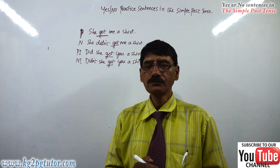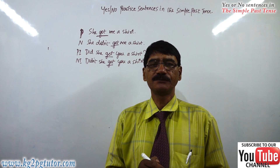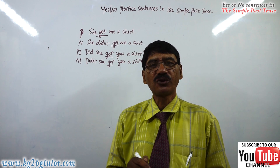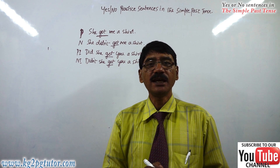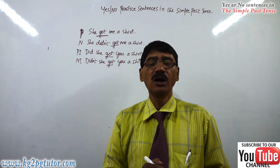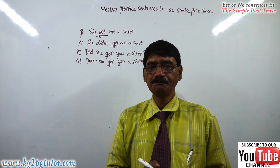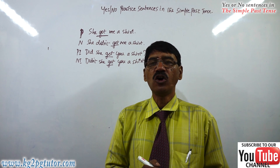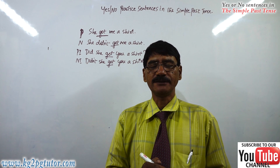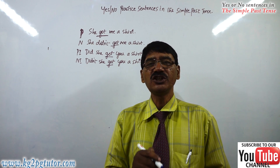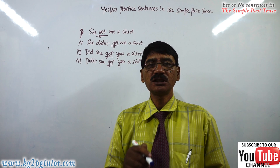Seventh one: 'We cooked rice and vegetables. We didn't cook rice and vegetables. Did you cook rice and vegetables? Didn't you cook rice and vegetables?' Eighth one: 'The students came on time. The students didn't come on time. Did the students come on time? Didn't the students come on time?'